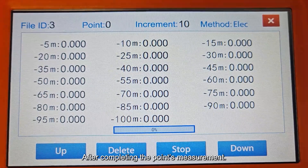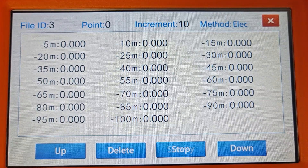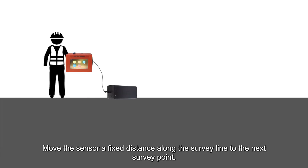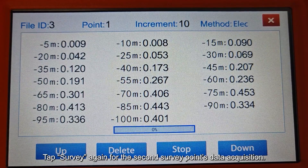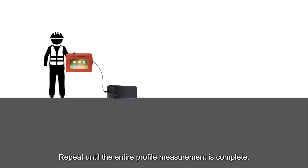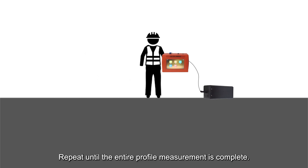After completing the point's measurement, move the sensor a fixed distance along the survey line to the next survey point. Tap Survey again for the second survey point's data acquisition. Repeat until the entire profile measurement is complete.